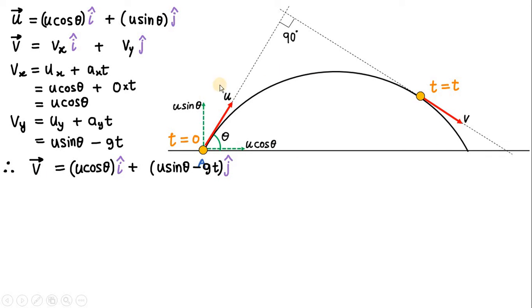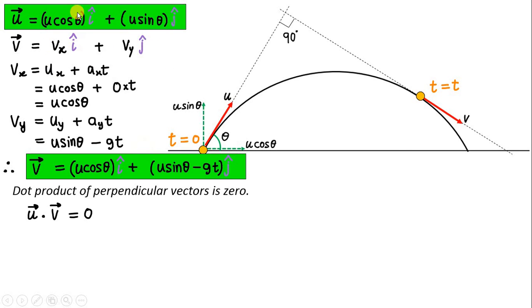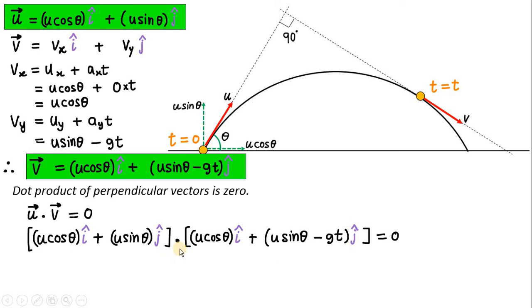Now we have both the initial velocity vector u and the final velocity vector v. Our aim is to find the time t after which v becomes perpendicular to u. The key concept here is that the dot product of perpendicular vectors is always zero. Since u and v are perpendicular to each other, u dot v must equal zero. So we substitute the expressions for u and v into this equation.